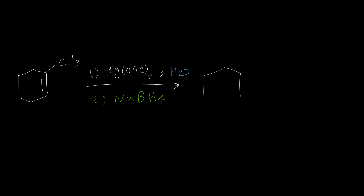Here for this example, we need to write the product exactly like the reactant. This carbon is secondary and this carbon is tertiary, so OH should attach to the tertiary carbon — the more substituted one — and H should attach to the less substituted carbon. Normally we don't show hydrogen in a bond-line structure, so we just don't write that.